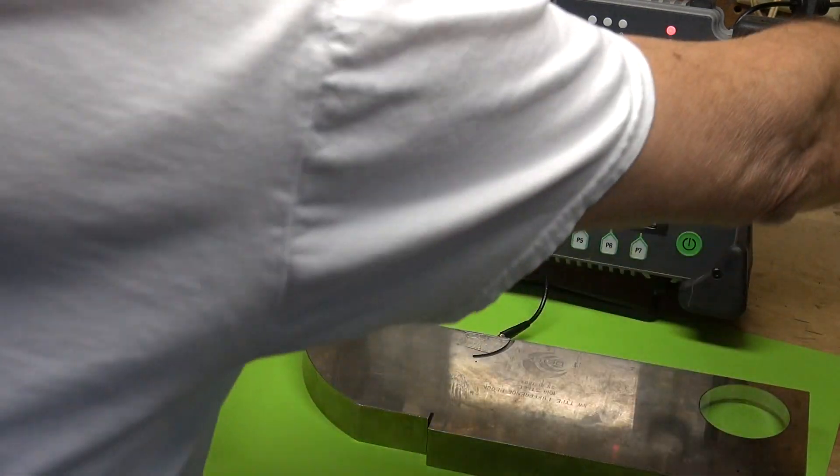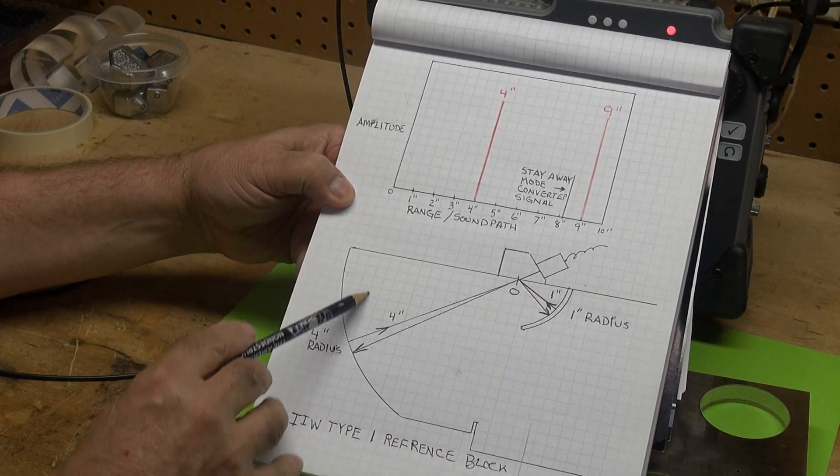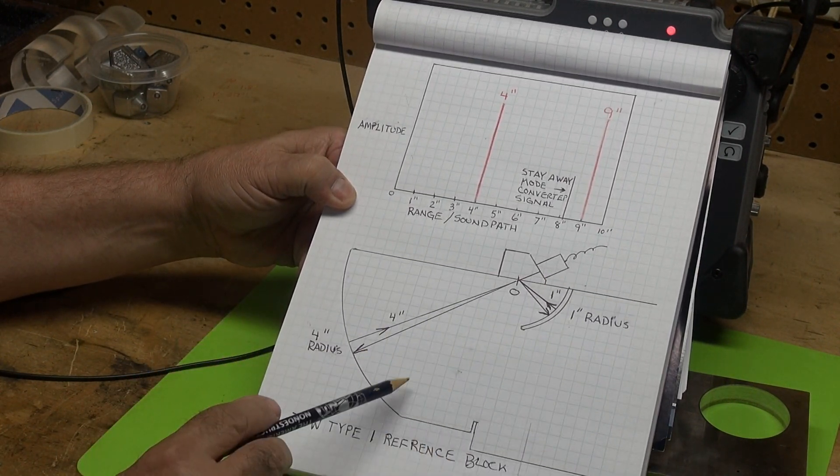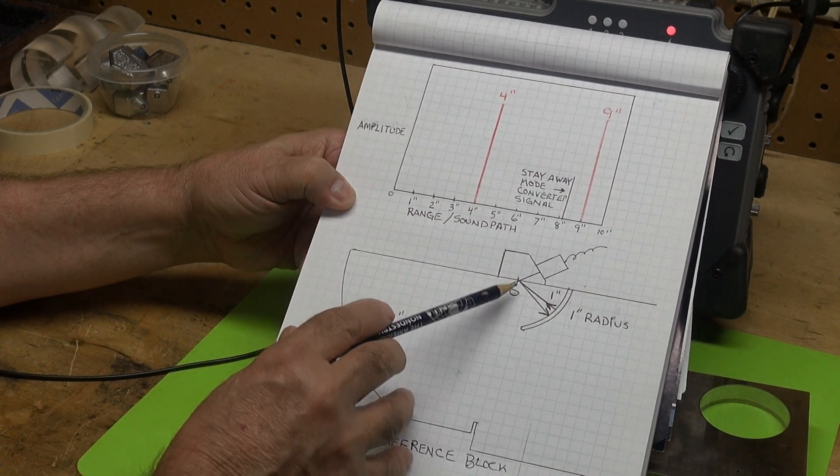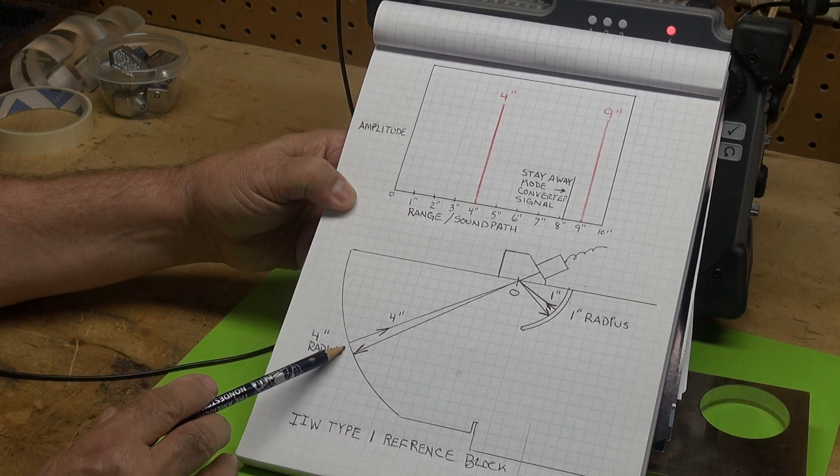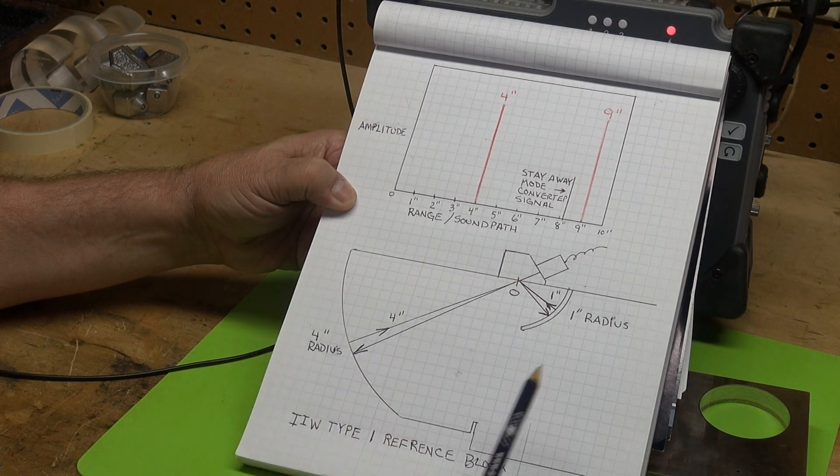Let me show you how that happens. Here's the type 1 IIW block. Here's the zero marking. From the zero to this radius is 4 inches, and from the zero to this radius is 1 inch.